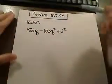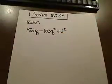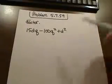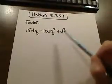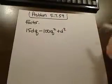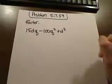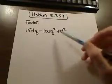Okay, this is problem 5.7.59 and we're asked to factor 15dq minus 100q squared plus d squared. So first thing is this is a trinomial, and anytime we're factoring a trinomial we want to write it in descending order and factor out any greatest common factors if there are any, and then use the trial and error process or the AC method to factor it.